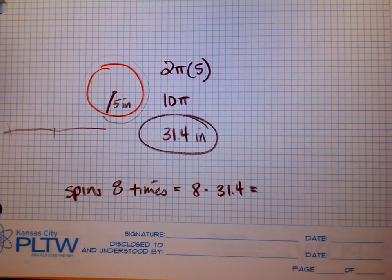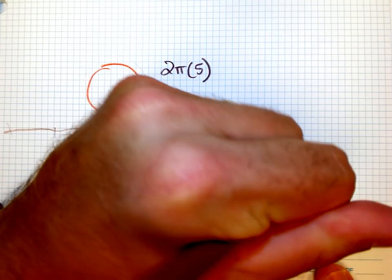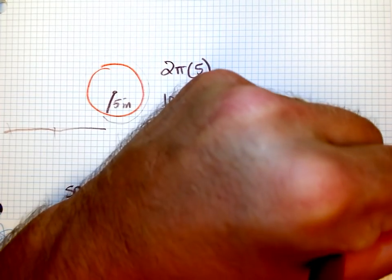And on my calculator, I'm using my phone here because I can't find my regular one. 31.4 times 8 would be 251 inches down the road.